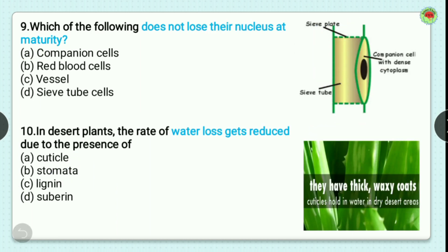Question number 9: which of the following does not lose its nucleus at maturity? Options are companion cell, red blood cell, vessels, and sieve tube cells. Companion cell is a cell which retains its nucleus till maturity. In the image you can see the companion cell with its nucleus clearly visible. So the correct option is option A, companion cell.